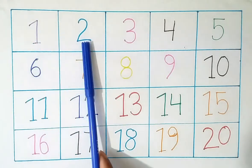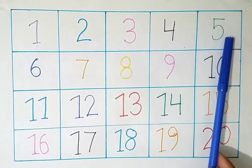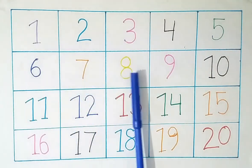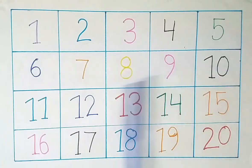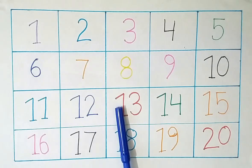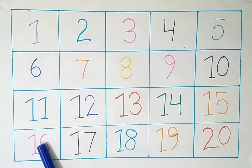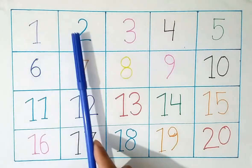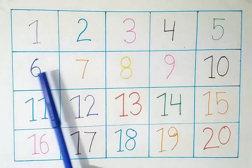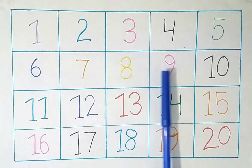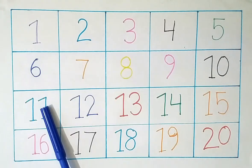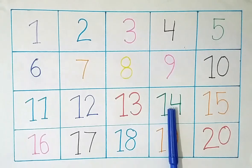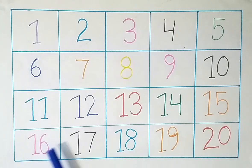1, 2, 3, 4, 5, 6, 7, 8, 9, 10, 11, 12, 13, 14, 15, 16, 17, 18, 19, 20.